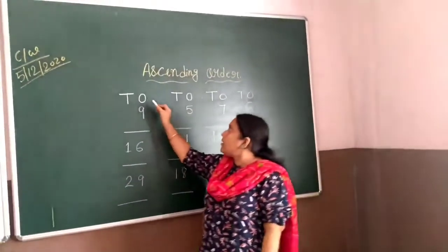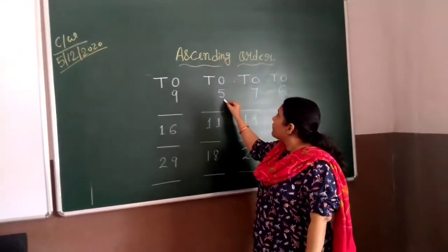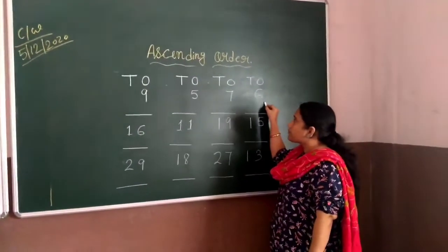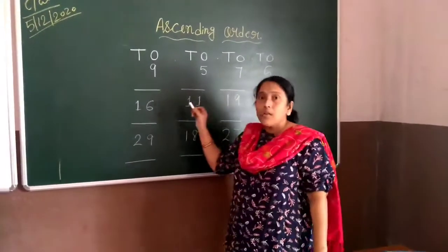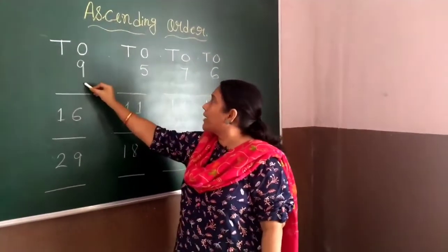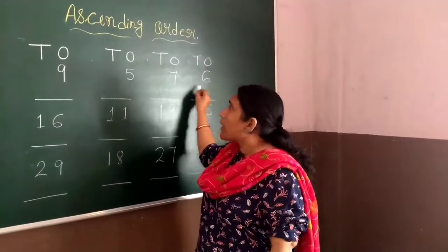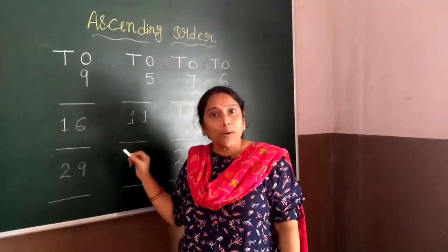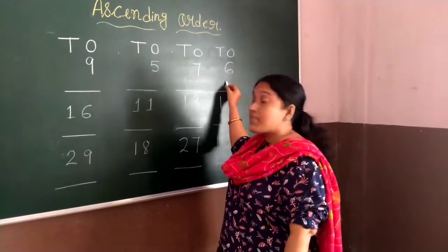Under the ones I have written 9, then 5, then 7, and then 6. You have to arrange the numbers from smaller to bigger. So — 9, 5, 7, 6 — can you tell me which one is the smaller number?